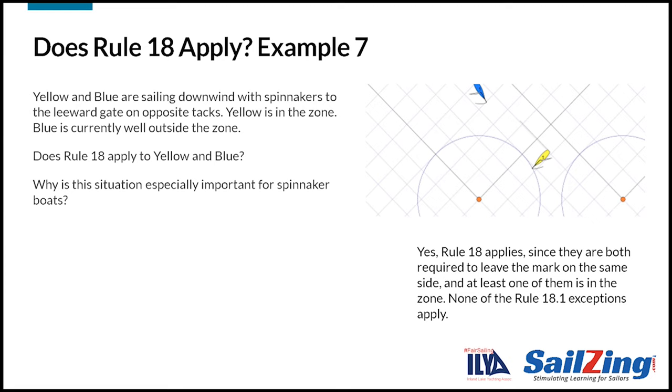Why do you think this situation is especially important to show with boats with spinnakers? The answer is that spinnaker boats sail fast and often sail at wide angles downwind. With high speed and wide angles, a boat behind can establish an overlap quickly. In the situation shown, blue is already overlapped with yellow. If you're entering the zone, it's best to look well behind you and anticipate mark room situations.